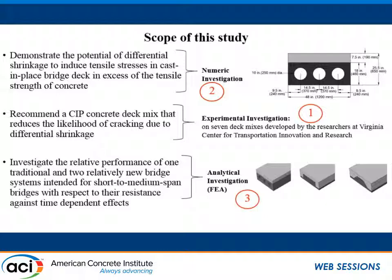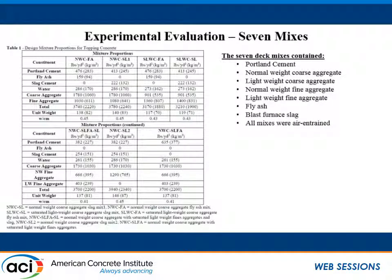I'm going to first talk about the experimental investigation on the seven deck mixes, then present the results of the numeric investigation on the voided slab system, and conclude with the results from the finite element analysis on those three bridge systems. Because differential shrinkage has the potential to cause high enough tensile stresses in the cast-in-place deck to cause cracking, a deck mix with low shrinkage is obviously desirable. Also desirable is a mix with high creep, because high creep alleviates the tensile stresses created as a result of differential shrinkage. So we were seeking to find a concrete mix that has low shrinkage and high creep. The seven deck mixes consisted of portland cement, normal weight and lightweight coarse aggregates, normal weight and lightweight fine aggregates. The cementitious materials were fly ash and blast-furnace slag, and all the mixes were air-entrained.